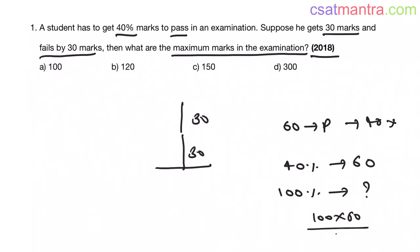100 into 60 by 40. 100 cancels to 25, 25 into 6 is equal to 150. So, C is your answer.